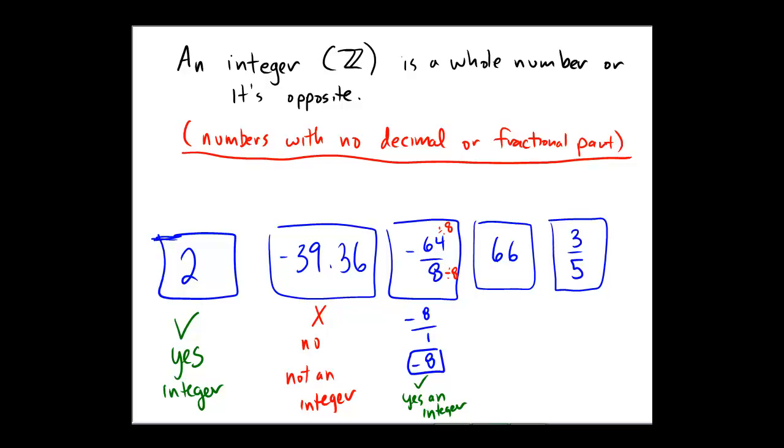Next, 66. Any decimal or any fraction? No. No decimal, no fraction. So yes, an integer. Yes, an integer. And how about for the final example? Pause the video if you haven't stopped it on your own to try one on your own if you'd like.